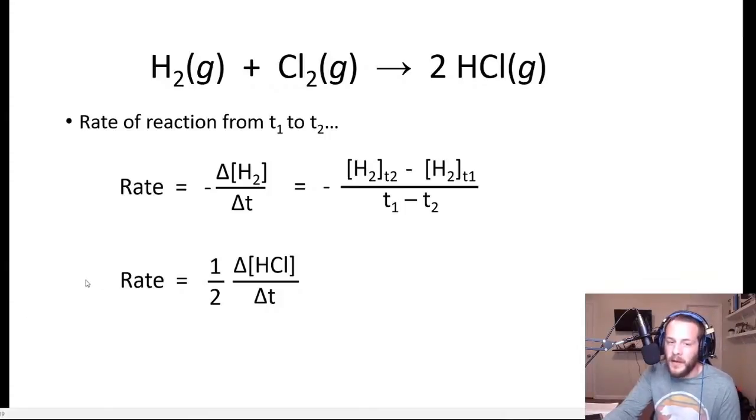So another way we can define the rate, this expression up here is defining the rate in terms of a reactant. We could also define the rate in terms of a product. For instance, if we wanted to define this reaction in terms of how fast this hydrogen chloride is being produced rather than how fast the hydrogen or the chlorine are being consumed, we could express that in the following way, where the rate is equal to one-half times the change in concentration of the hydrogen chloride divided by the change in time. So one-half delta concentration of HCl over delta T. Now you might be thinking, where does that one-half come from? Well, that factor, that one-half, is related to the stoichiometry of the reaction.